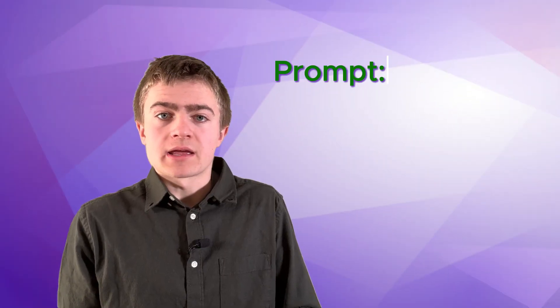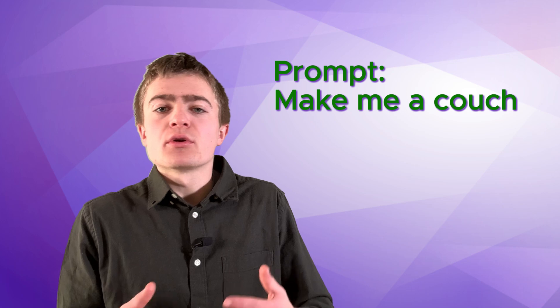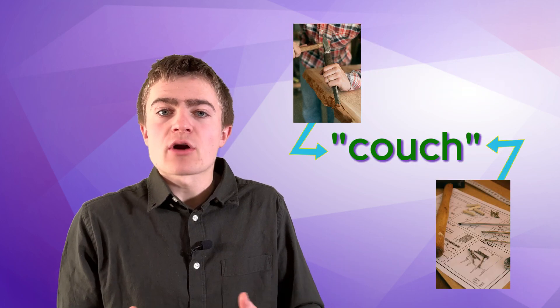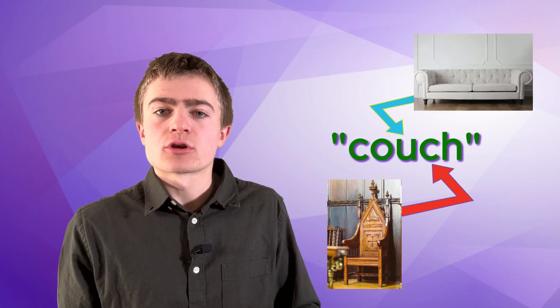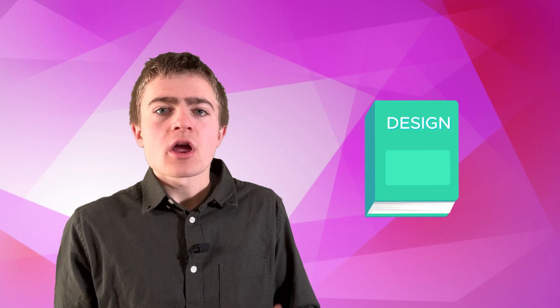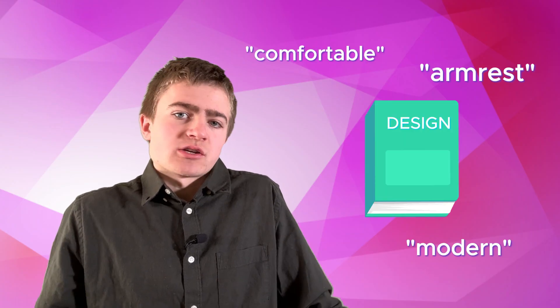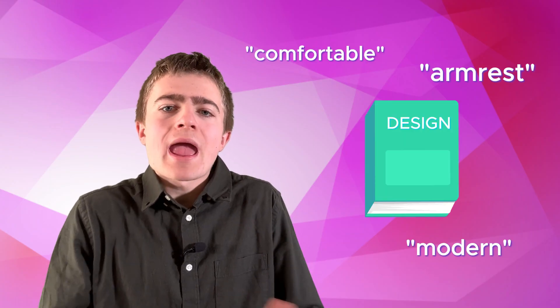So when you type a prompt like, make a couch, the AI isn't pulling a ready-made answer from a database. Instead, it's predicting what a couch might look like based on everything it learned during training. It works kind of like texting, when your phone suggests the next word. Except here, it's guessing way more complex ideas, like how to design an entire couch. When we use AI to help generate text, it's following the same procedure. The model recognizes patterns to determine which words should follow each other. It does this to build sentences, paragraphs, even entire books.